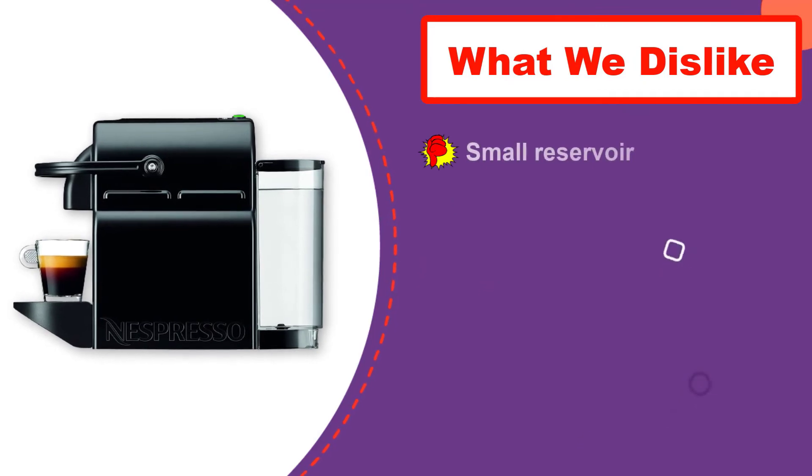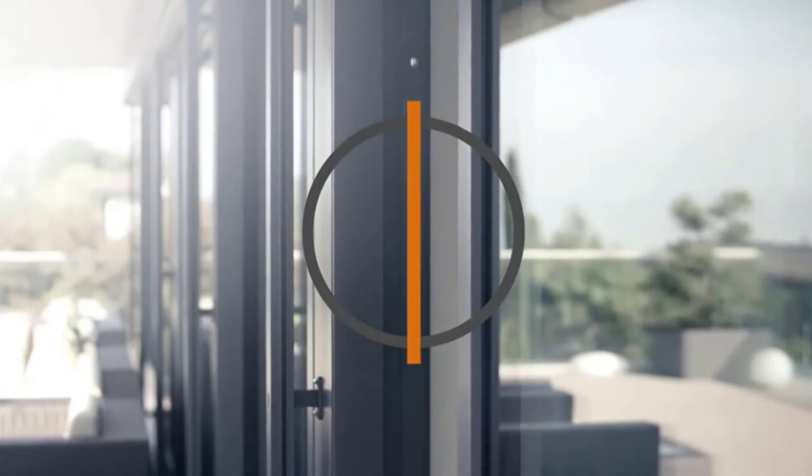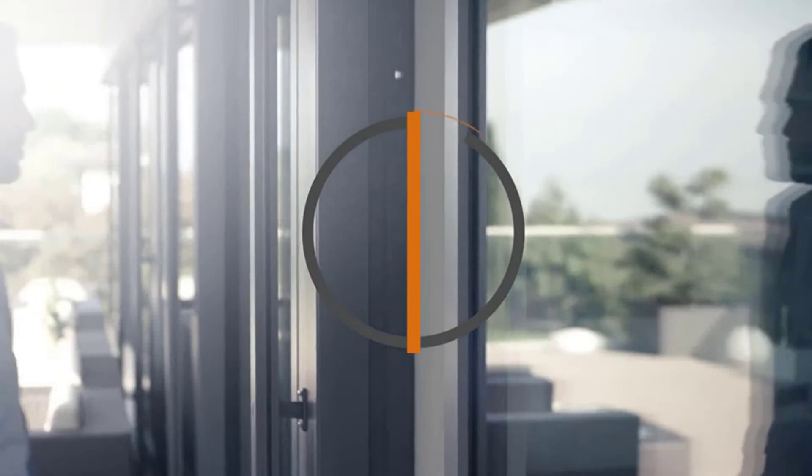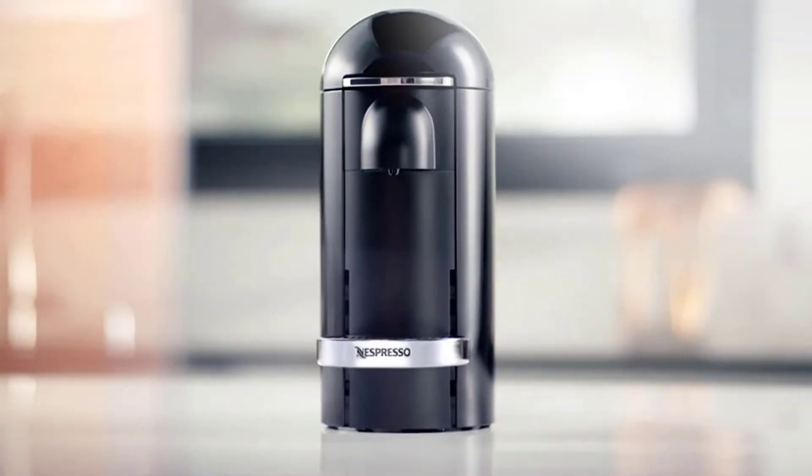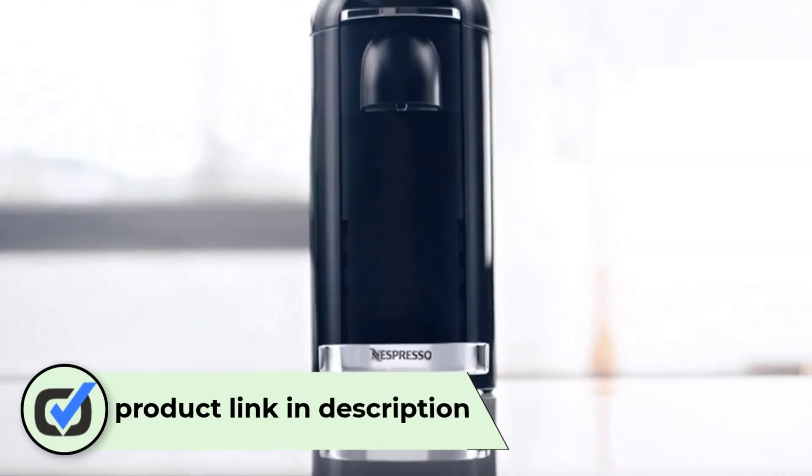Related, is the Nespresso Inissia better than the Nespresso Pixie? Number 1. Nespresso Vertuo Plus Deluxe Coffee Machine. Make sure to check out our buyer's guide for more information about the differences between Vertuo line capsules and Nespresso's original line. This machine is our top pick for Vertuo line capsules.